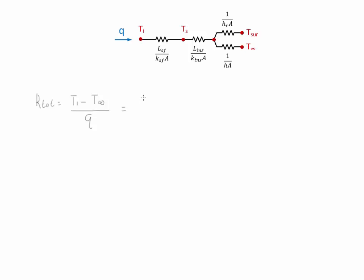By knowing these values, we find that the total resistance equals 0.25 kelvins per watt.